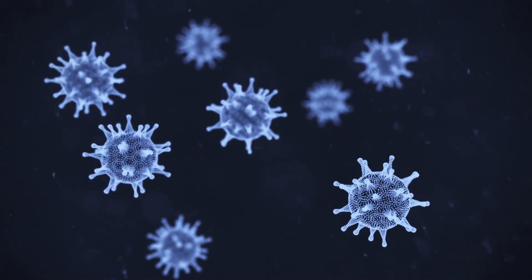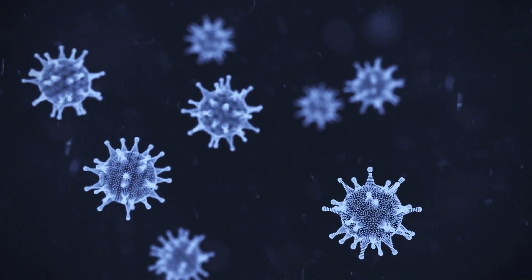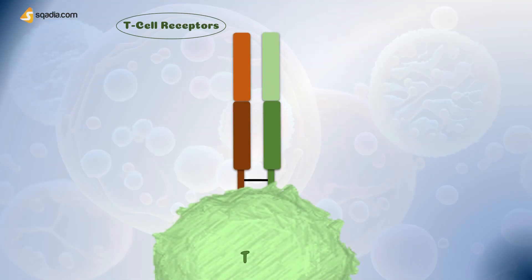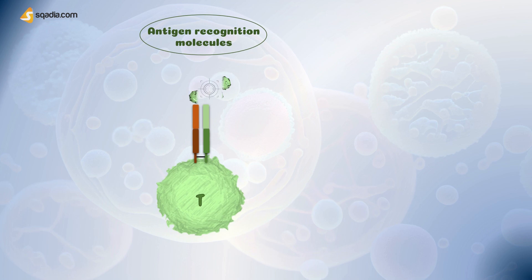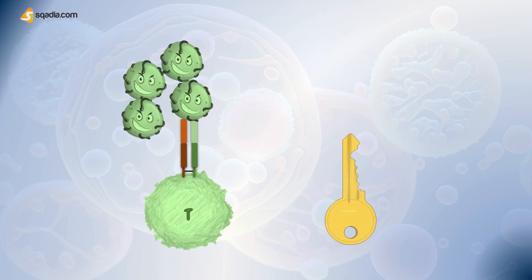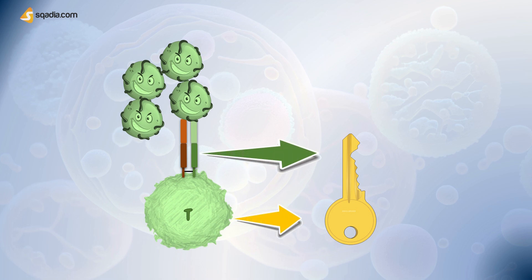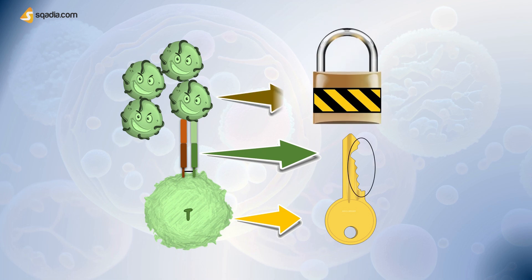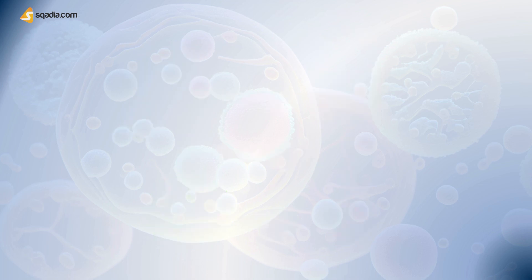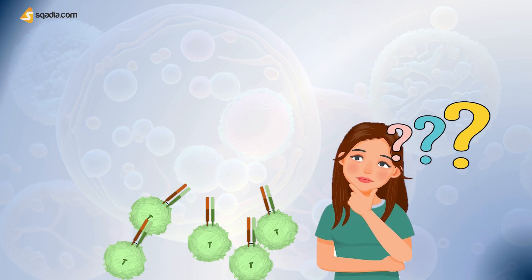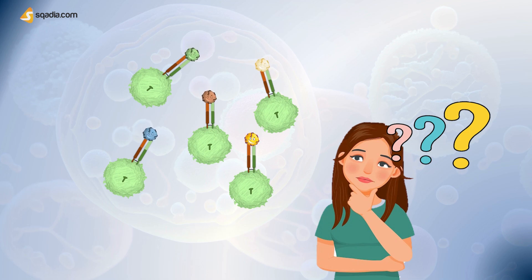T-cell receptors are mainly antigen recognition molecules that enable T-cells to detect foreign pathogens. Consider it like this: a T-cell is like a key head, and the TCRs are like the key shaft, with variable ridges that have the ability to unlock only a particular type of lock — that is, an antigen. There is always a particular key to unlock a particular lock.